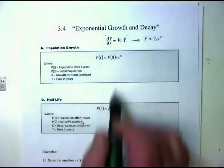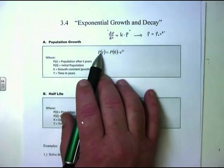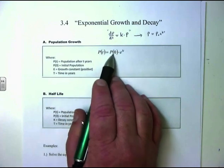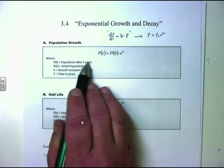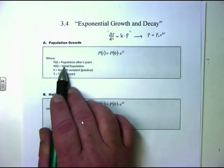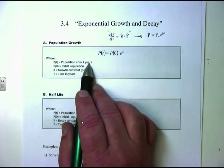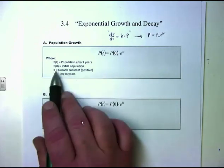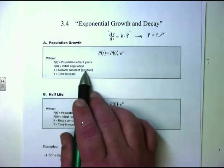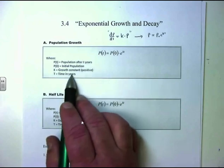We're going to focus on the formulas you're expected to know. For a population growth problem, the formula is: P of T equals P naught — P sub zero — times E to the KT. P of T stands for population after T years. P of zero is the initial population. K is the growth constant, which is a positive constant. And T is time, typically measured in years, but it could be months or days for bacteria or other contexts.